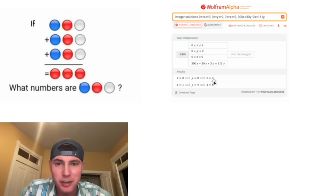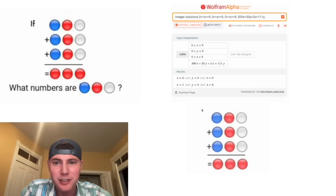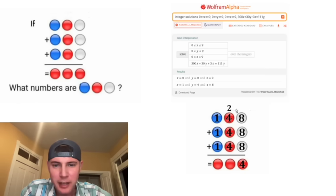So the 0, 0, 0, that's the trivial solution. Let's test out this solution. We have the x is equal to 1, the y is equal to 4, and the z is equal to 8. 8 plus 8 plus 8 is equal to 24. And then 2 plus 4 is 6, plus 4 is 10, plus 4 is 14. So we have the 1 and the 4. And then 1 plus 1 plus 1 plus 1 is equal to 4. So you can see this did end up working out.